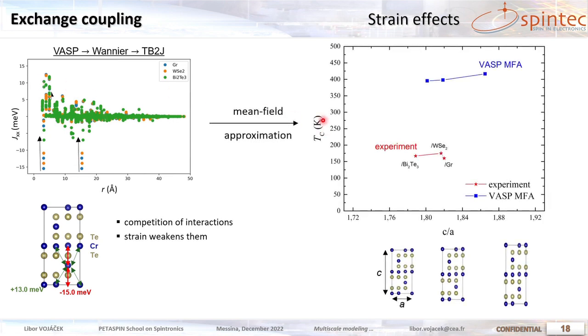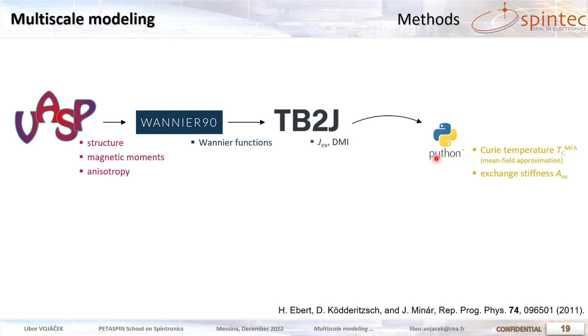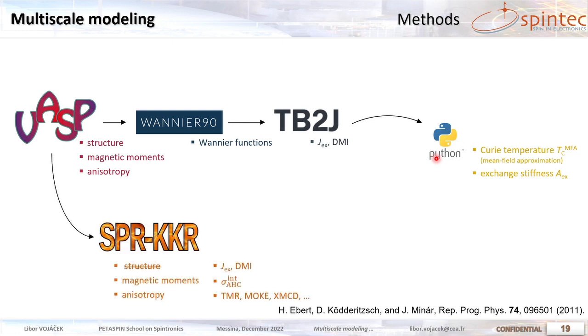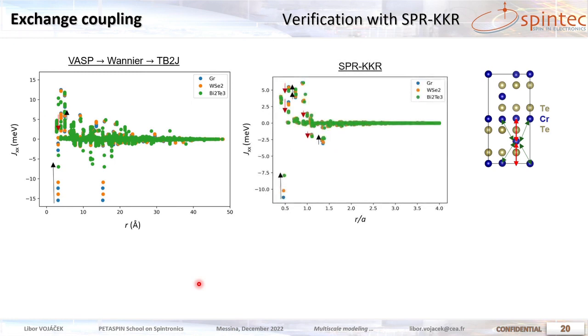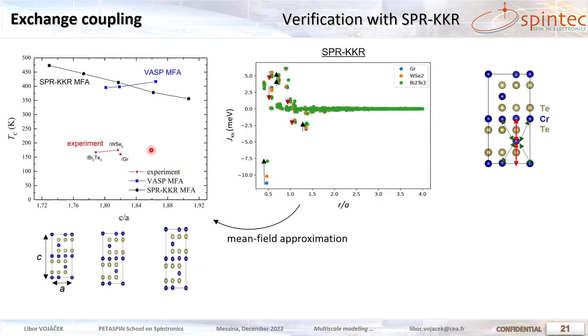So we can estimate the Curie temperature based on the mean field. And what we see is a very large overestimation of the Curie temperature compared to the experiment. So to make sure that the exchange values are correct we repeat the calculation in a different ab initio code based on Green functions. We need to take the structure from VASP because it can do structure relaxation. And we can recalculate and we see a qualitatively very similar result also including the effect of strain. And we can estimate the Curie temperature again. And still we see very large overestimation. The trend with the strain is decreasing compared to VASP. But this is the subtle competition of the positive and negative exchanges. So maybe the mean field approximation is not accurate enough.